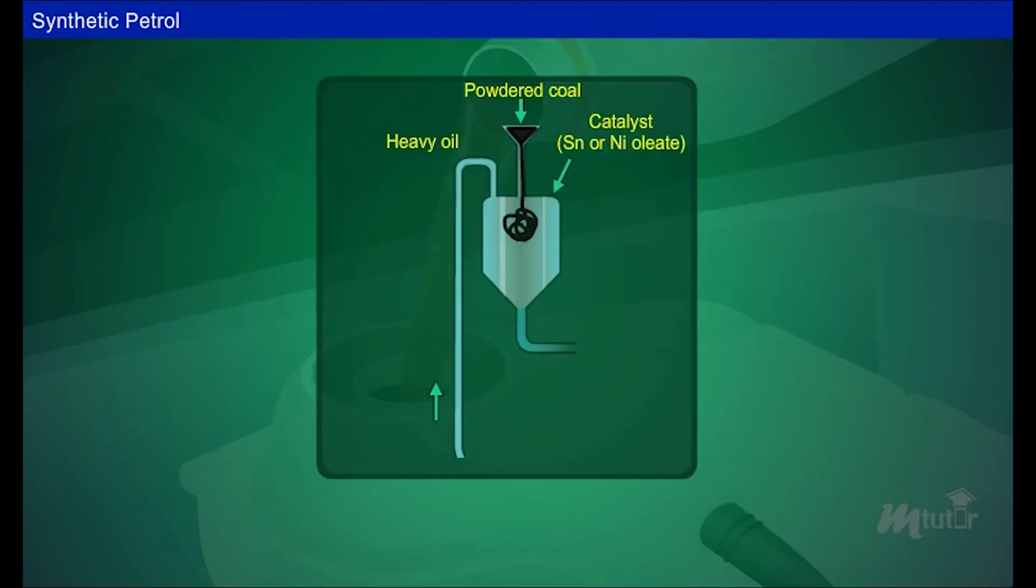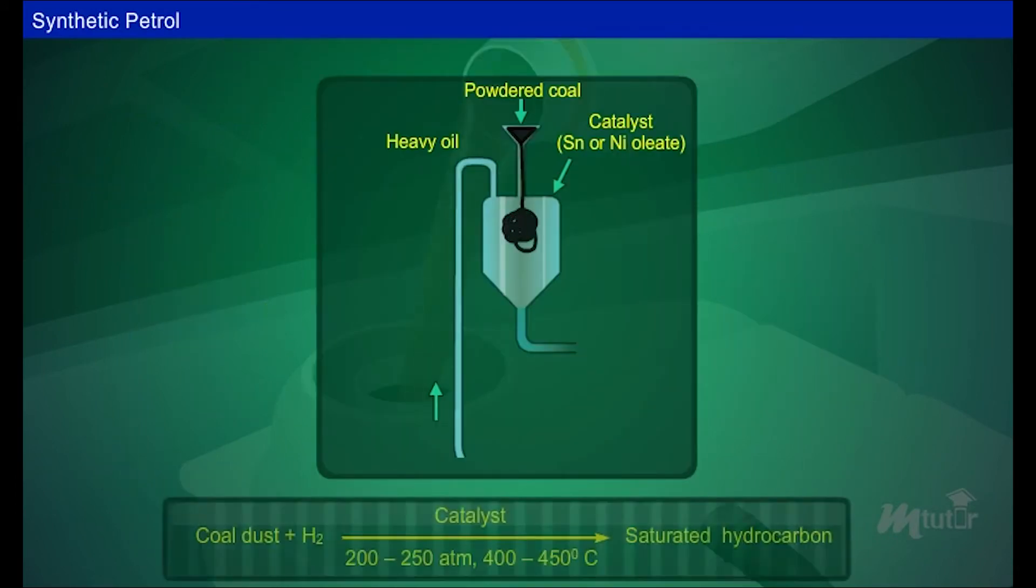Low rank coal is powdered well and made into a paste by adding heavy oil and tin or nickel oleate as a catalyst.